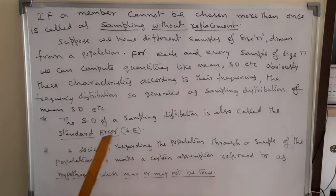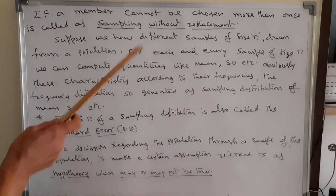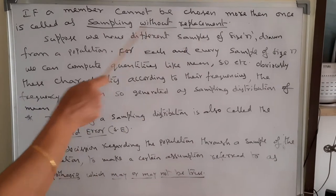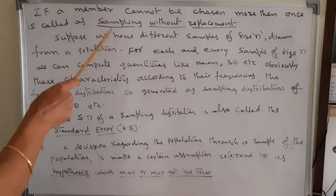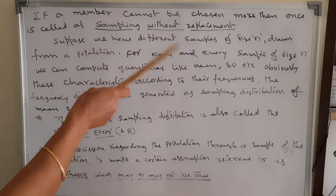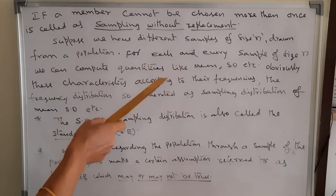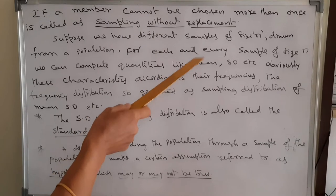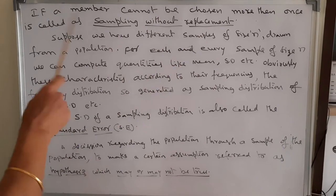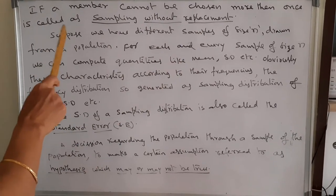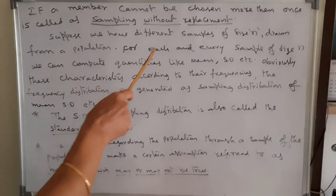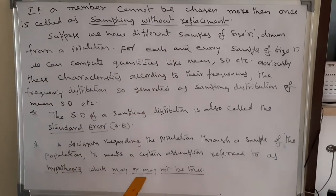If a member cannot be chosen more than once, it is called sampling without replacement.